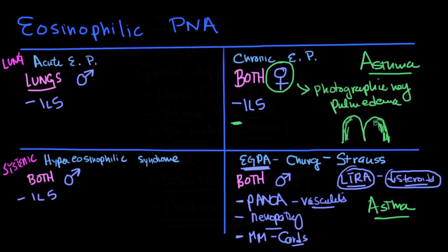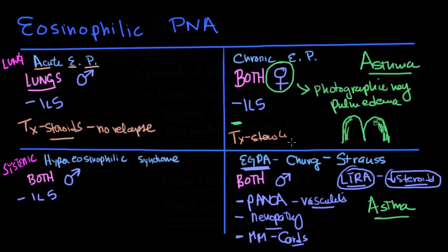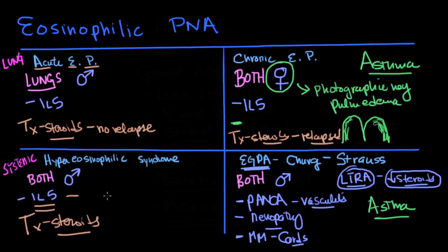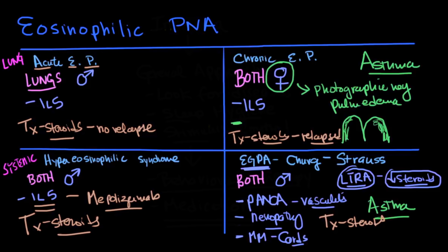The treatment for all of these is steroids. For acute eosinophilic pneumonia, steroids are used and there is usually no relapse. For chronic eosinophilic pneumonia, patients can improve within hours to days, but there may be relapse, so they need a longer course — typically months. For hypereosinophilic syndrome, steroids are the treatment, but because of IL-5 involvement you may also use an IL-5 inhibitor, which is mepolizumab. For Churg-Strauss, steroids are used, but you can also add more aggressive immunosuppression like methotrexate and azathioprine.